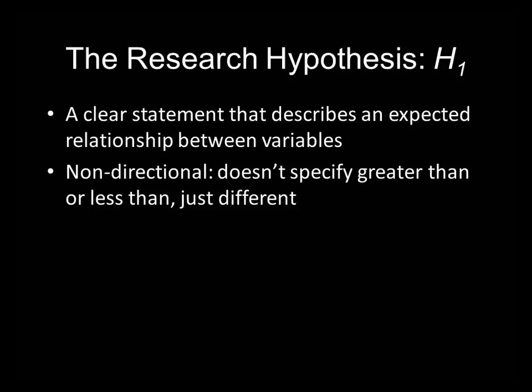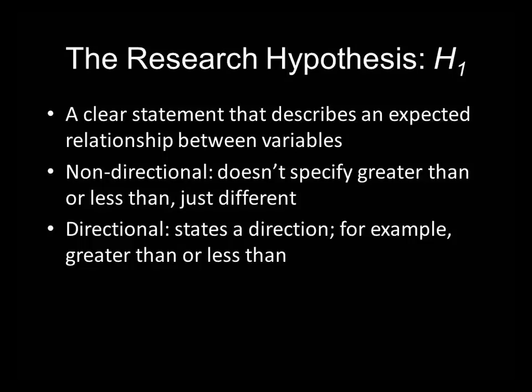One type of research hypothesis is the non-directional research hypothesis. This is one that doesn't specify whether one variable is greater than or less than another — it just says that they're not equal, that they're simply different. In contrast, the directional research hypothesis states a direction, for example greater than or less than.